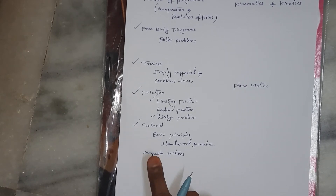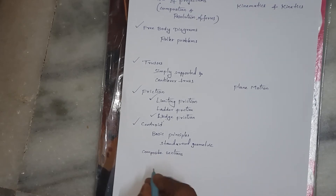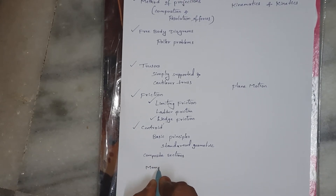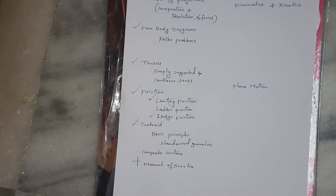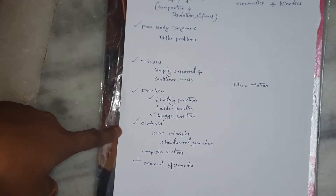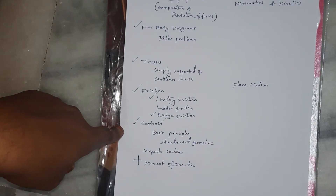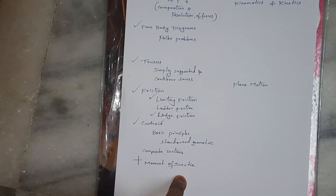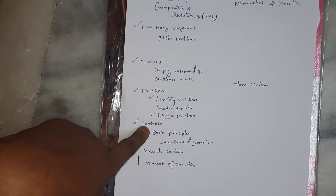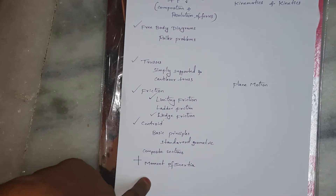After centroid, cover Center of Gravity and then Moment of Inertia. For Moment of Inertia, calculate it about the centroidal axis for composite sections — find the total section's moment of inertia. Centroid and Moment of Inertia together form an important and manageable topic.